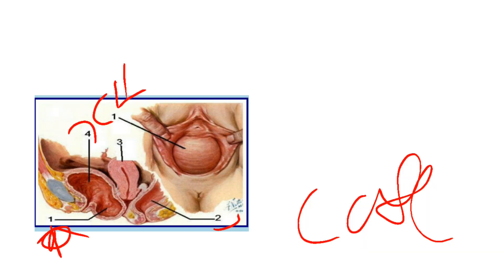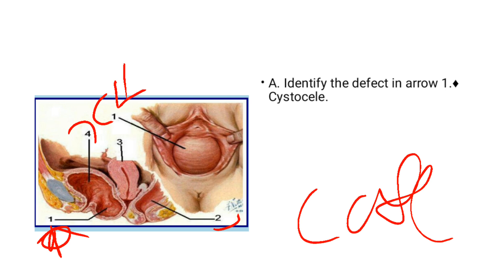So, identify the defect in R1. That's the cystocele. So R1, this R1 here, that's the cystocele.